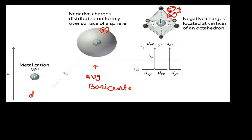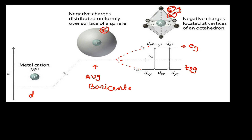Because the repulsion is greater, the potential energy is higher, so the energy of orbitals oriented along the axis increases. Conversely, the energy of orbitals oriented between the axes decreases. As a result, the d orbitals no longer remain a set of five degenerate orbitals — they split into a doubly degenerate set represented as eg, and a triply degenerate set represented as t2g. Here, 't' represents triply degenerate, 'e' represents doubly degenerate, and 'g' stands for gerade.